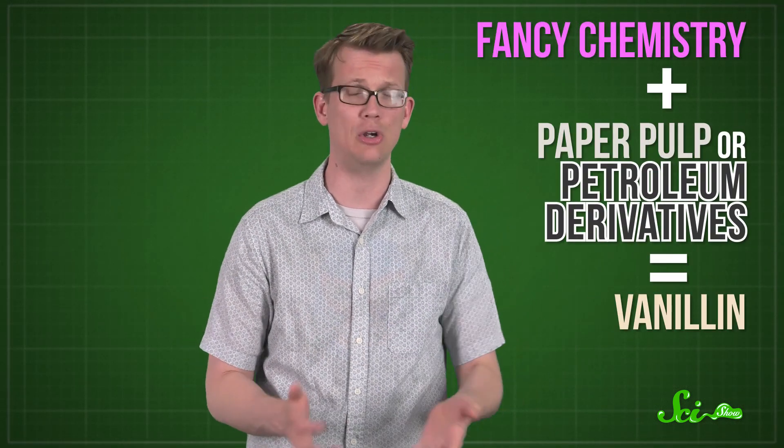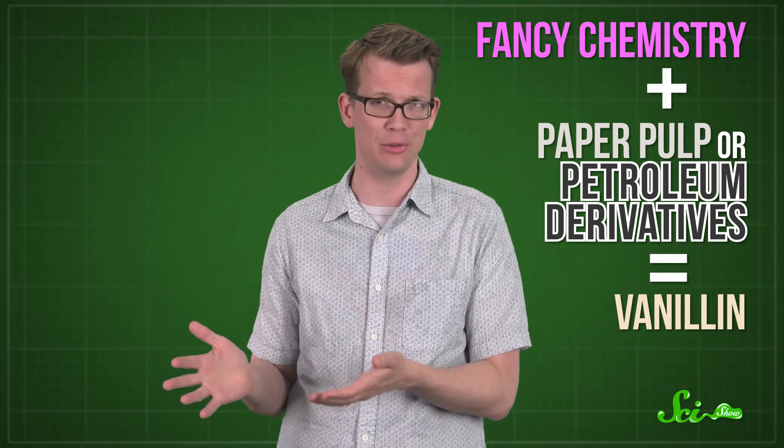But in the lab, you can make the same vanillin in huge batches and for much less money by doing some fancy chemistry on paper pulp or petroleum derivatives. That may sound less appetizing than getting it from beans, but remember, the molecule you get at the end is exactly the same. And that's how we're able to vanillify most of the foods we eat. So maybe don't write off artificial vanilla just because it's not natural. You'll save some big bucks.